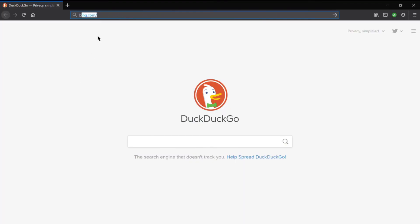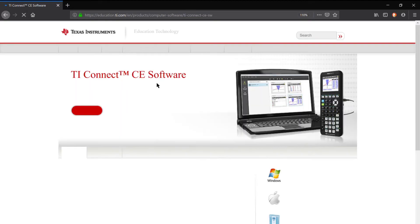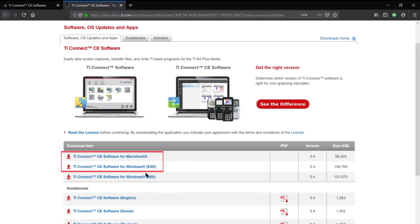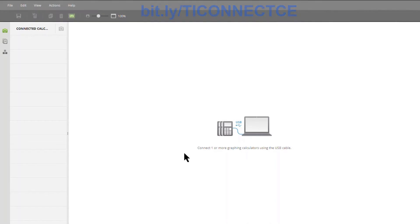Okay, for those of you with OS 5.3.1 or above, you need a computer with either Windows or Mac since you'll be creating a file to send to your calculator. Once you've downloaded and installed TI Connect CE from TI's website, which you can get by going to the short link bit.ly/ti-connectce, all uppercase.